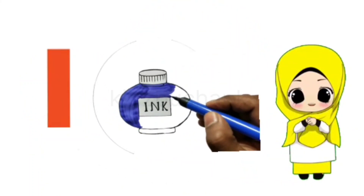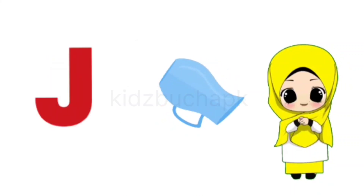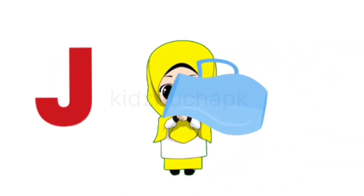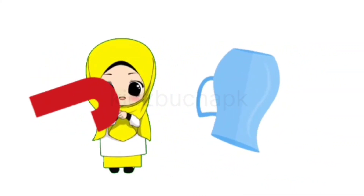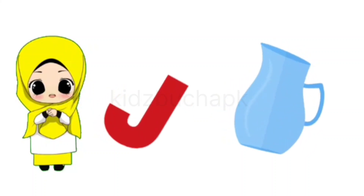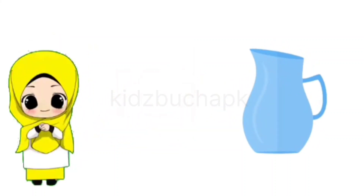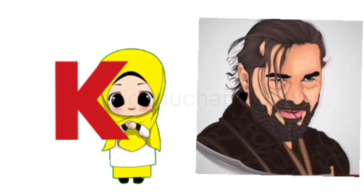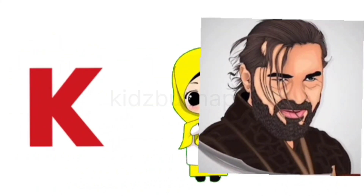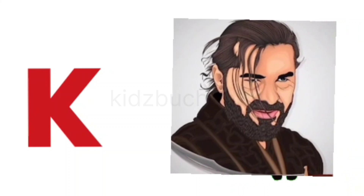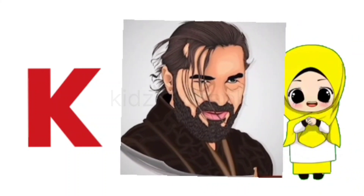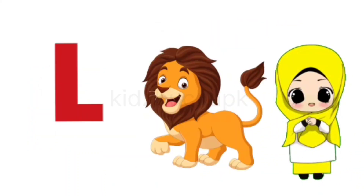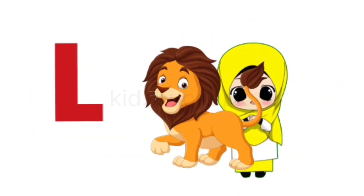J for Jug, Jug means Jug. K for King, King means Badshah. L for Lion, Lion means Sher.